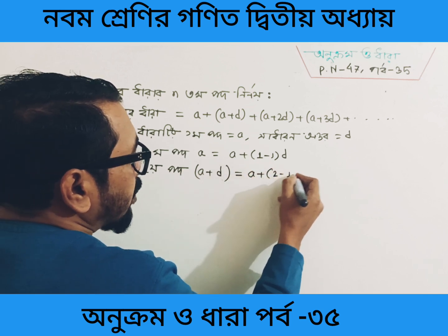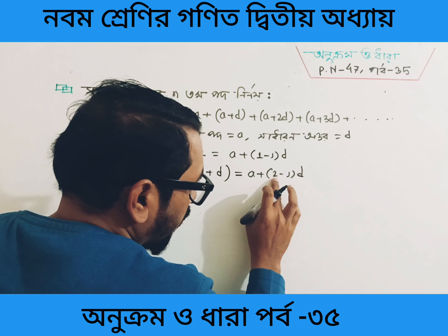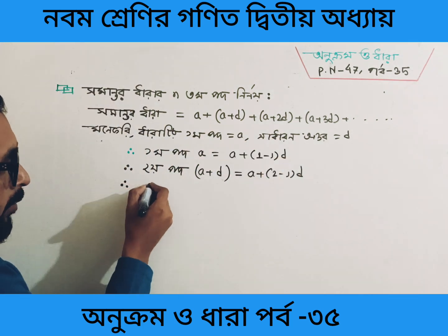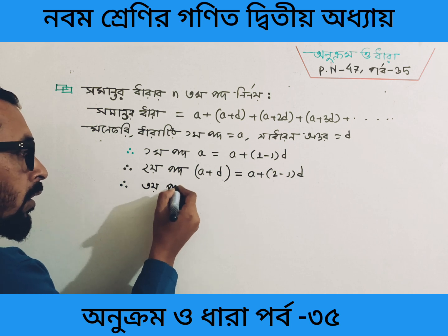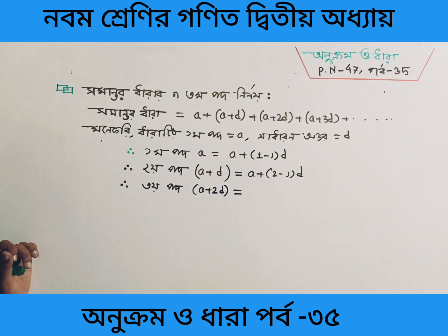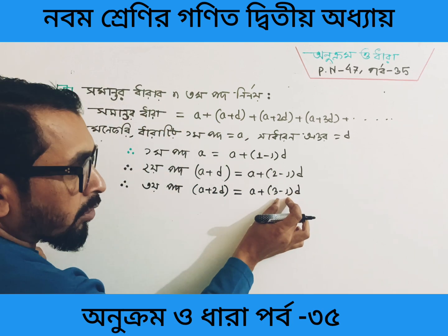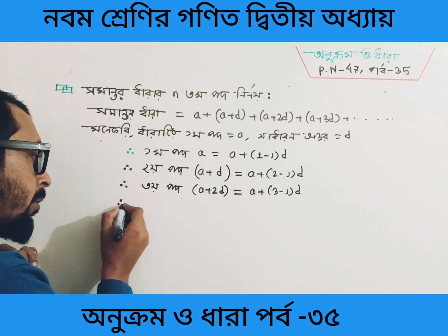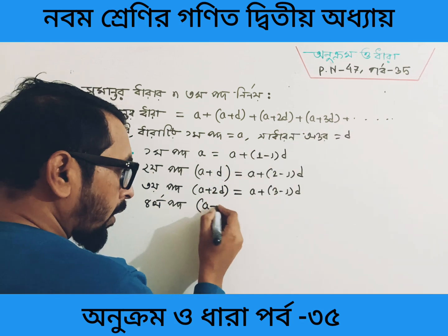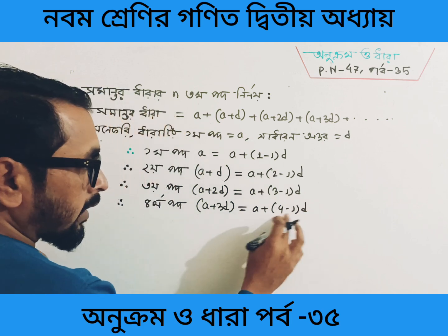A plus 2 minus 1 into d. If we have 2 minus 1 into d, we will have a minus. So if we have a minus 1 into d, we will have a plus d. A plus 2 minus 2 into d. If we have a plus 2 minus 1 into d, the third step is 2d, that is a plus 2d, and then a plus 2d is equal to 4d. So we can say a plus a plus 2d.